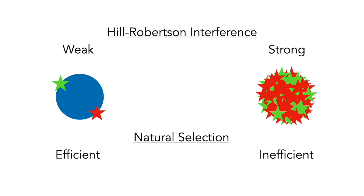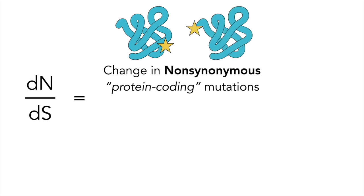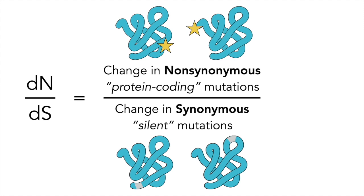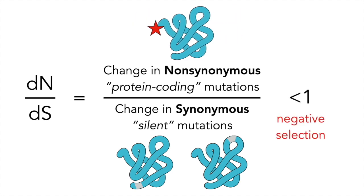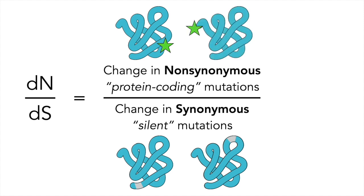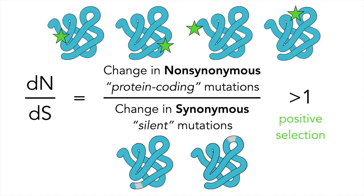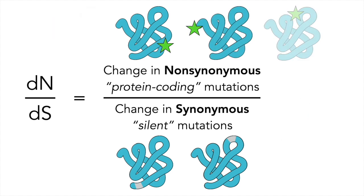To measure the efficiency of selection, we utilize the statistic called dN/dS. dN/dS is the ratio of non-synonymous mutations, or mutations that change protein coding sequences, to synonymous mutations, which do not change proteins and provide a baseline rate for mutation accumulation. When protein coding mutations experience negative selection, they are purged from the population and this ratio is less than 1. Conversely, when protein coding mutations are selected for, this ratio exceeds 1. Finally, if there is no selection, this ratio is approximately 1.